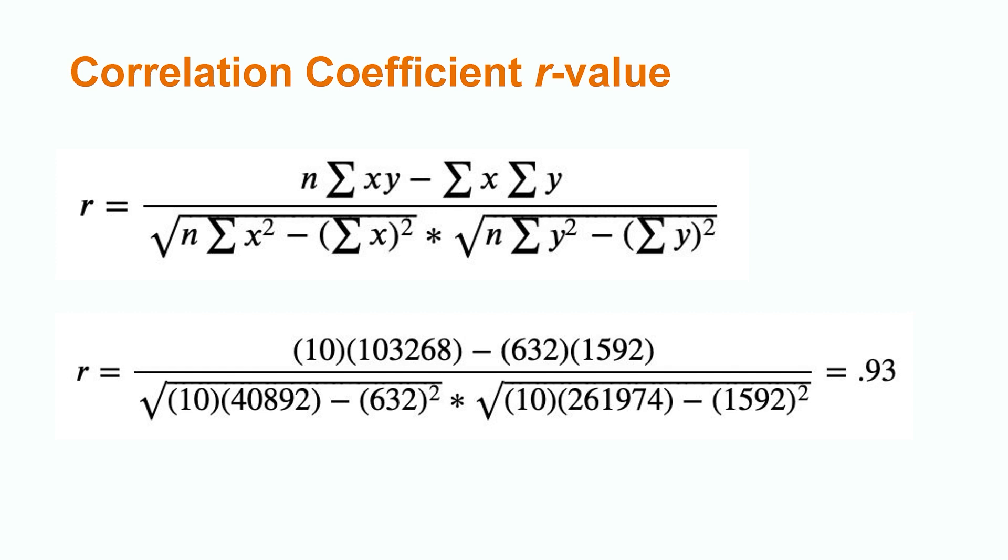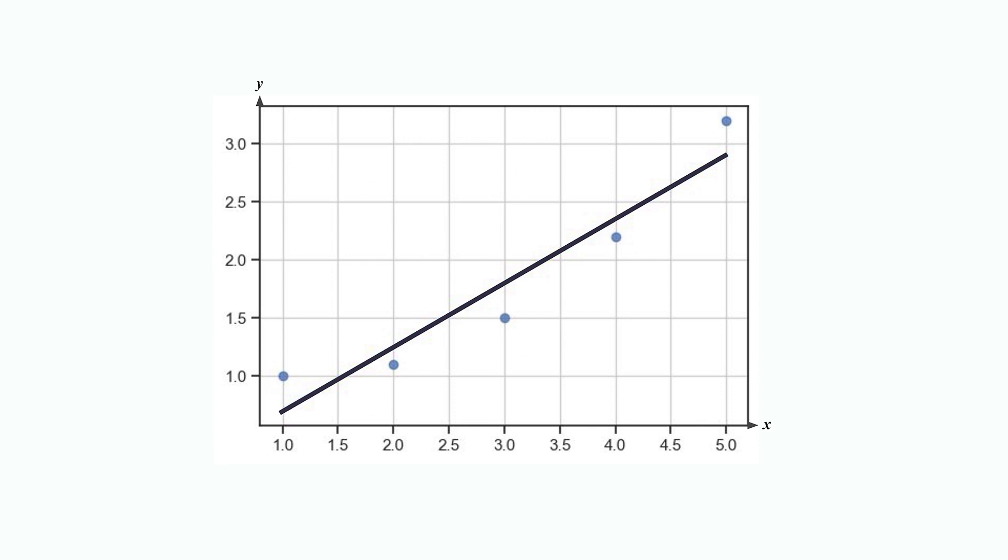Be careful though, sometimes you get an r-value that looks really good, but that doesn't necessarily mean a linear model is the best model for the data. Consider the following data set. The r-value of the linear model shown here is quite high, but does the data seem to imply a linear relationship?